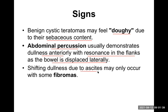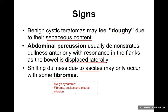Shifting dullness may occur due to ascites, which may only occur with some fibroma. Meig syndrome is a combination of fibroma with ascites and hydrothorax — meaning pleural effusion, especially on the right side. This is an important exam question. Because of the ascites, shifting dullness is positive in case of fibroma. Fibromas are not huge tumors, so the shifting dullness test can be easily performed.